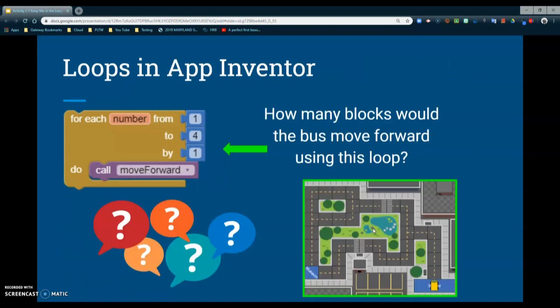The next thing we want to look at is loops in Inventor and an example of how this would actually look. Here you can see we have a for loop with from one to four, counting by ones. Our do is going to get our bus to move forward. We need to understand how many blocks the bus would move forward using this loop. Here we have our school bus located at the school, and based on this counter loop we need to understand that if we run this block of code, how many blocks would that school bus actually move.